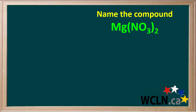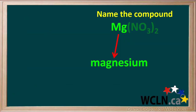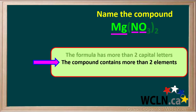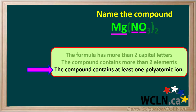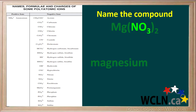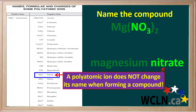Let's name the compound with the formula Mg(NO₃)₂. The metal is magnesium, and magnesium has only one possible charge, so the beginning of the name is simply magnesium. Looking at the formula, we see it has more than two capital letters, which means the compound contains more than two elements. Any ionic compound with more than two elements must contain at least one polyatomic ion. Looking at our table, we see the second part of the formula is NO₃, which is called nitrate. So the second part of the name is just nitrate — a polyatomic ion does not change its name when forming a compound.